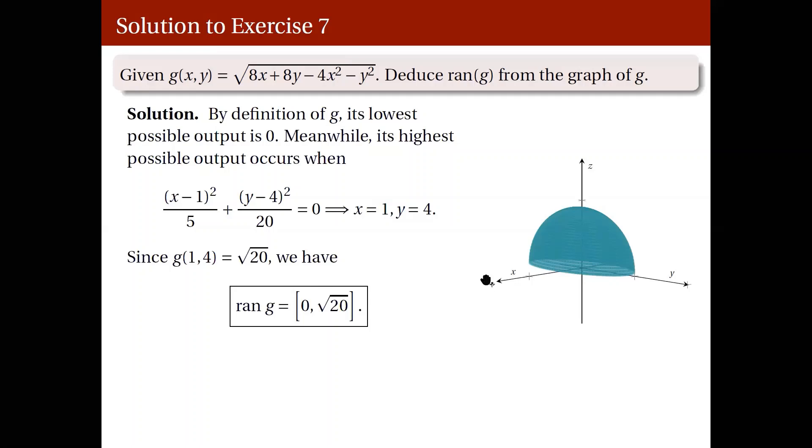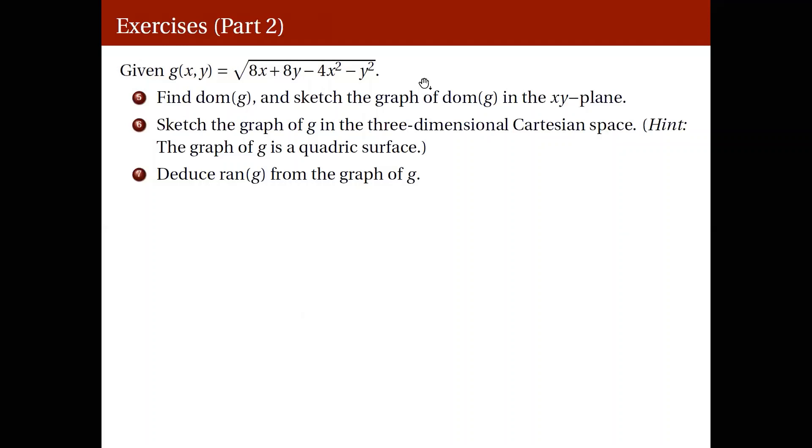So, this point here at the very top of your ellipsoid has z equal to square root of 20. All right. So, that's it for item number 7 and for part 2 of our discussion video.